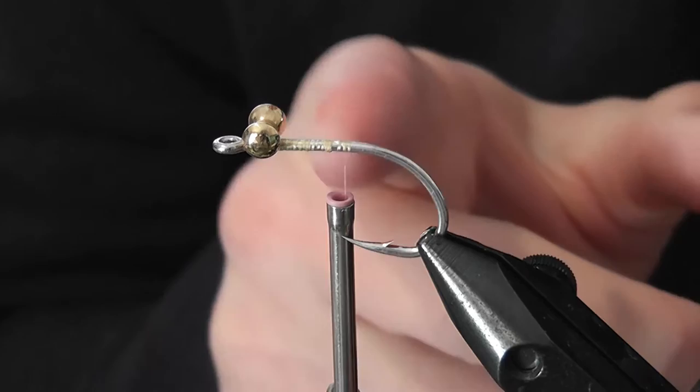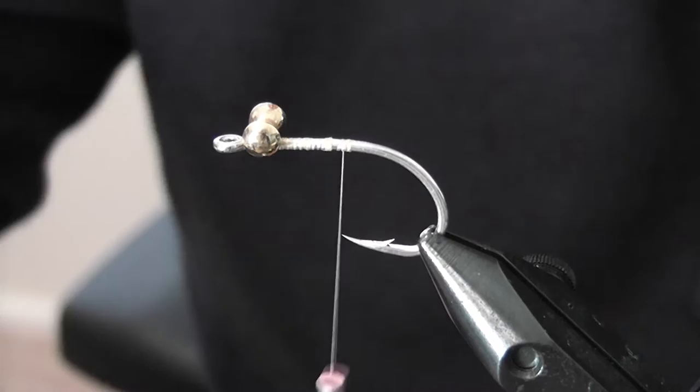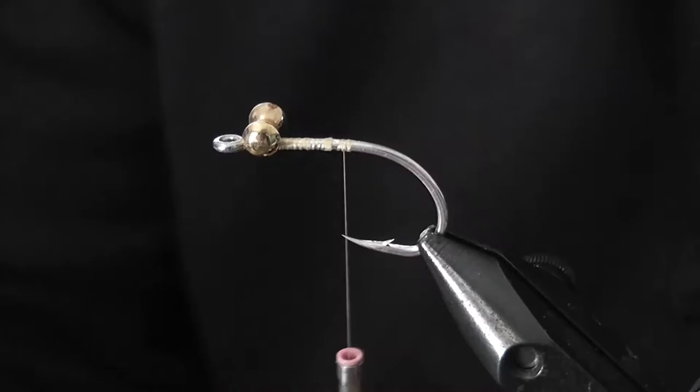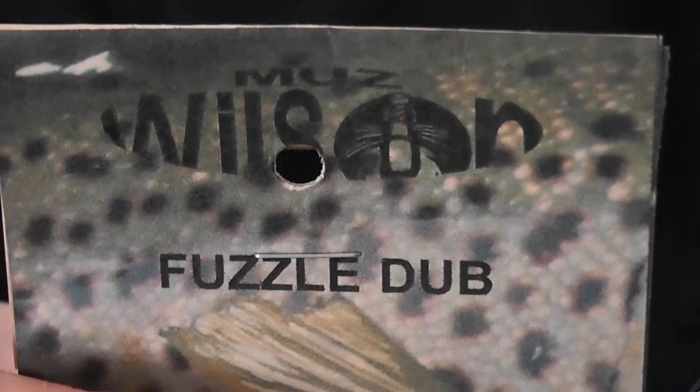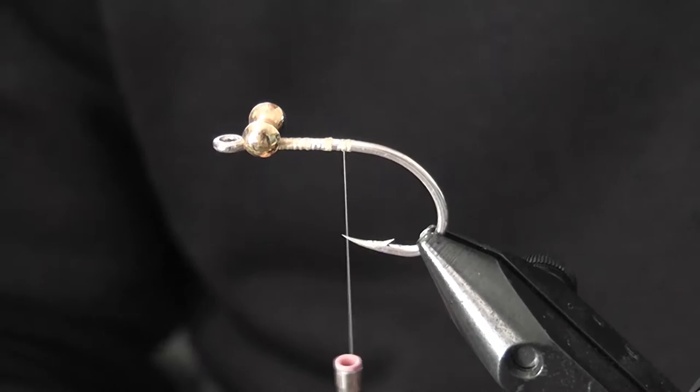This is on a Gamakatsu SL12S10, just lead dumbbell eyes, tan thread. In this case I'm using 6-0 thread. I'm going to use two types of dubbing. The first one is EP shrimp dub in tan. The second one is good old fuzzle dub from Muzz Wilson. As well as that, I've got silicon legs. This is barred orange and a little bit of pearl crystal flash for the feelers and some mono crab eyes.